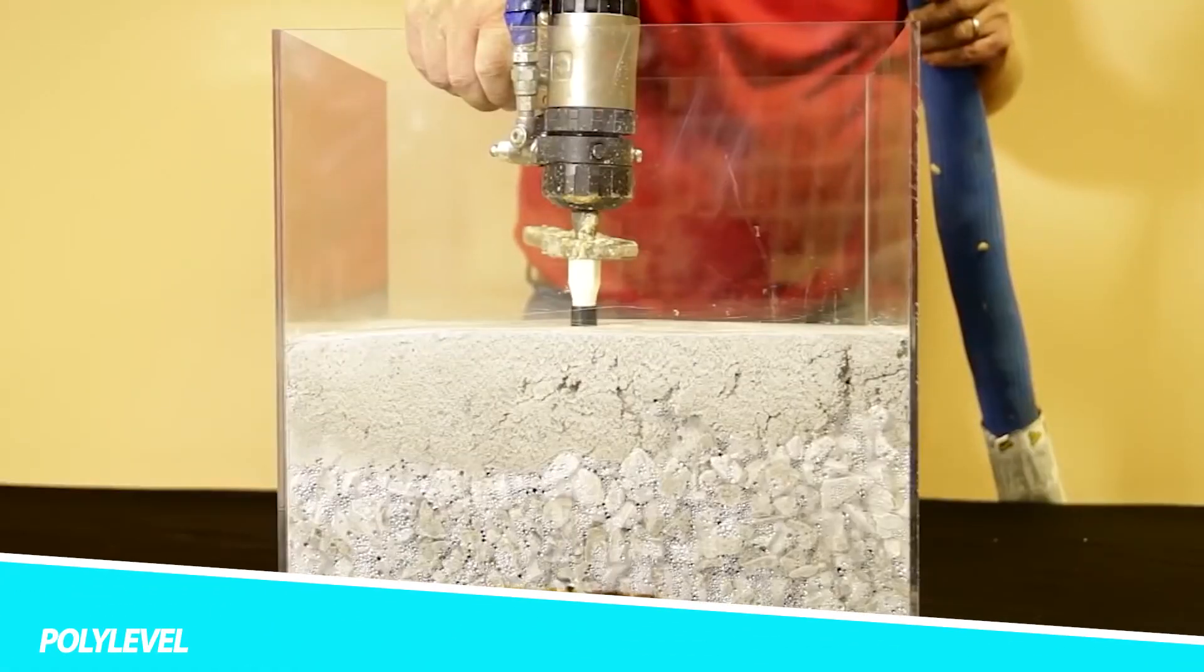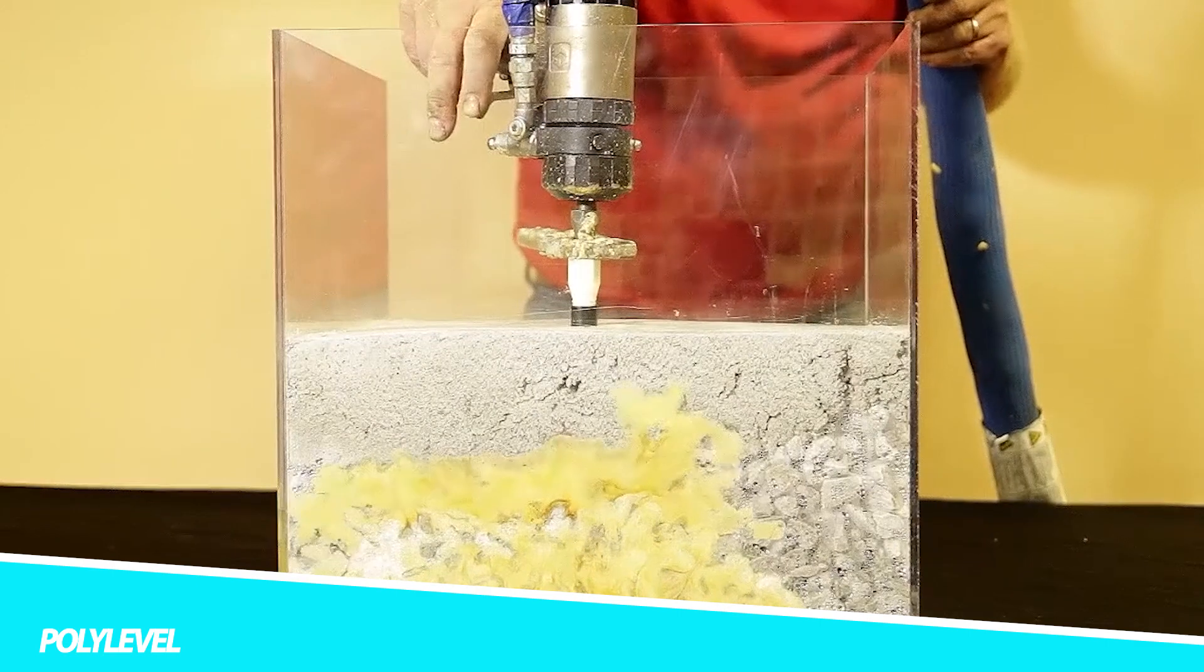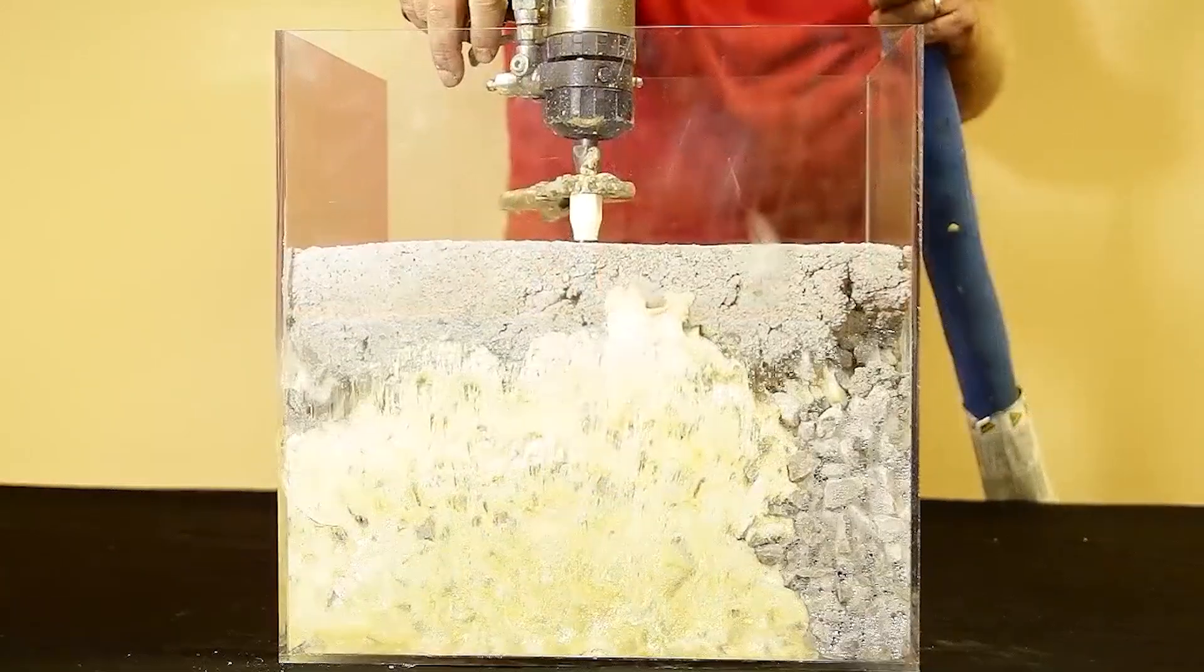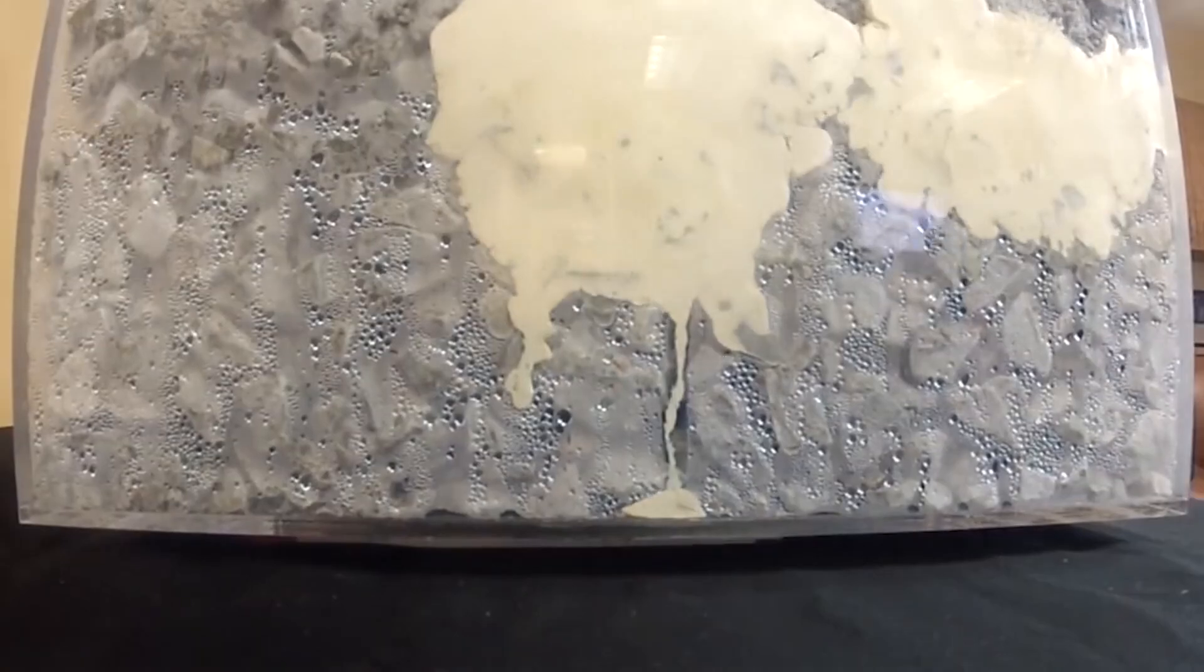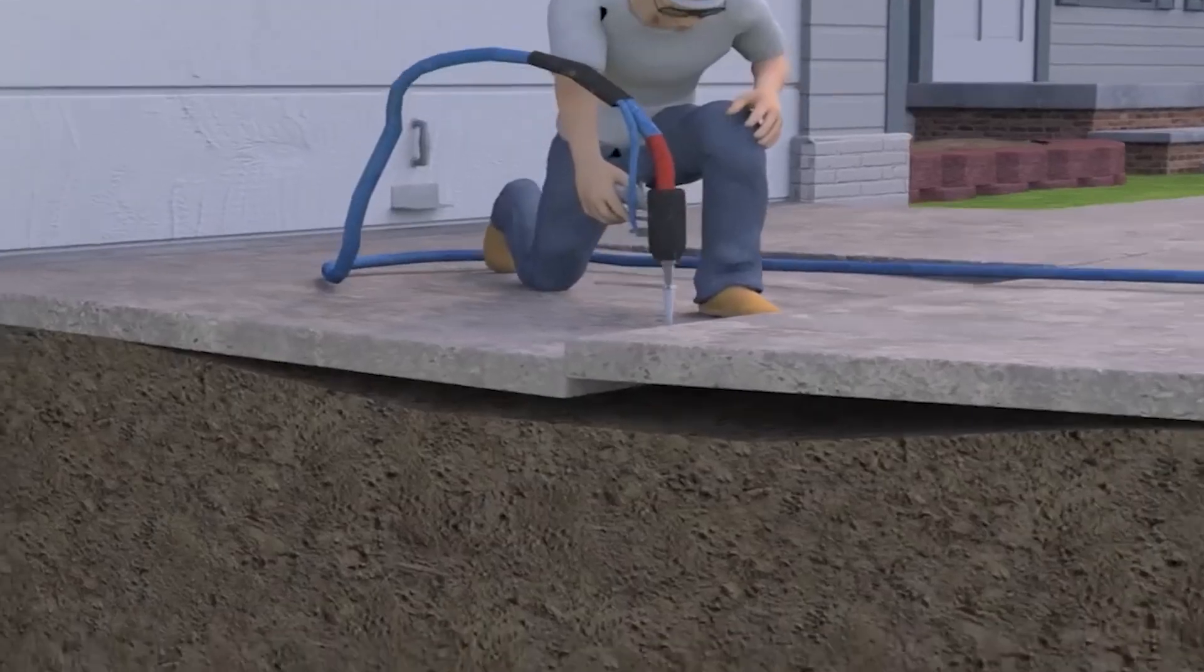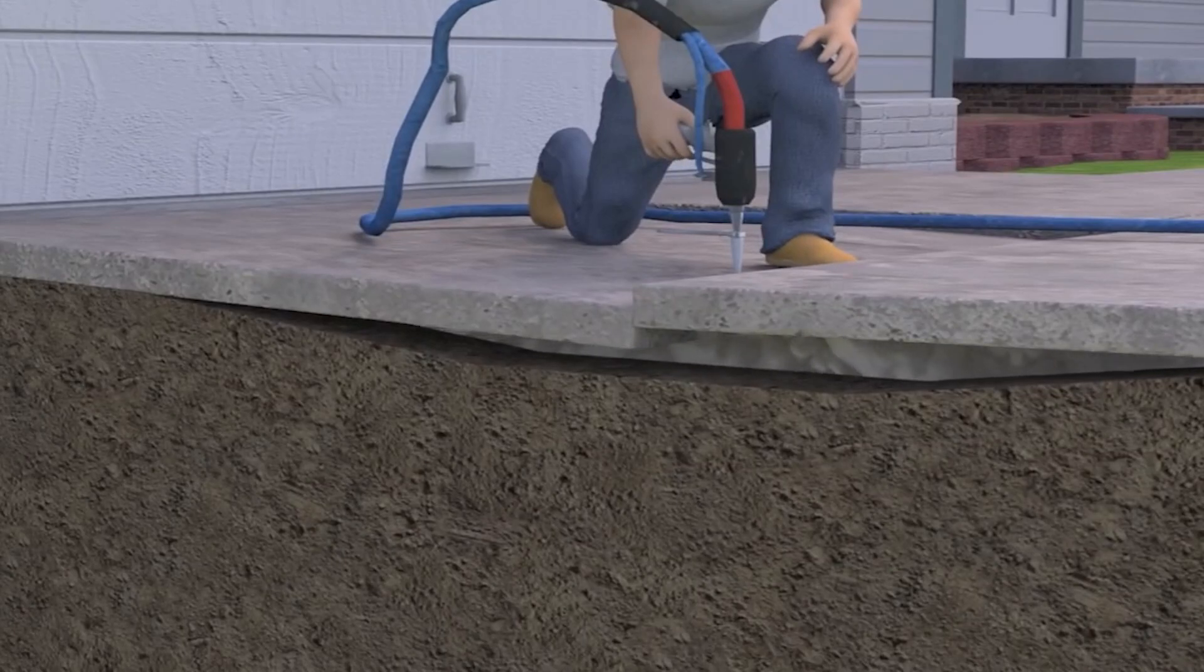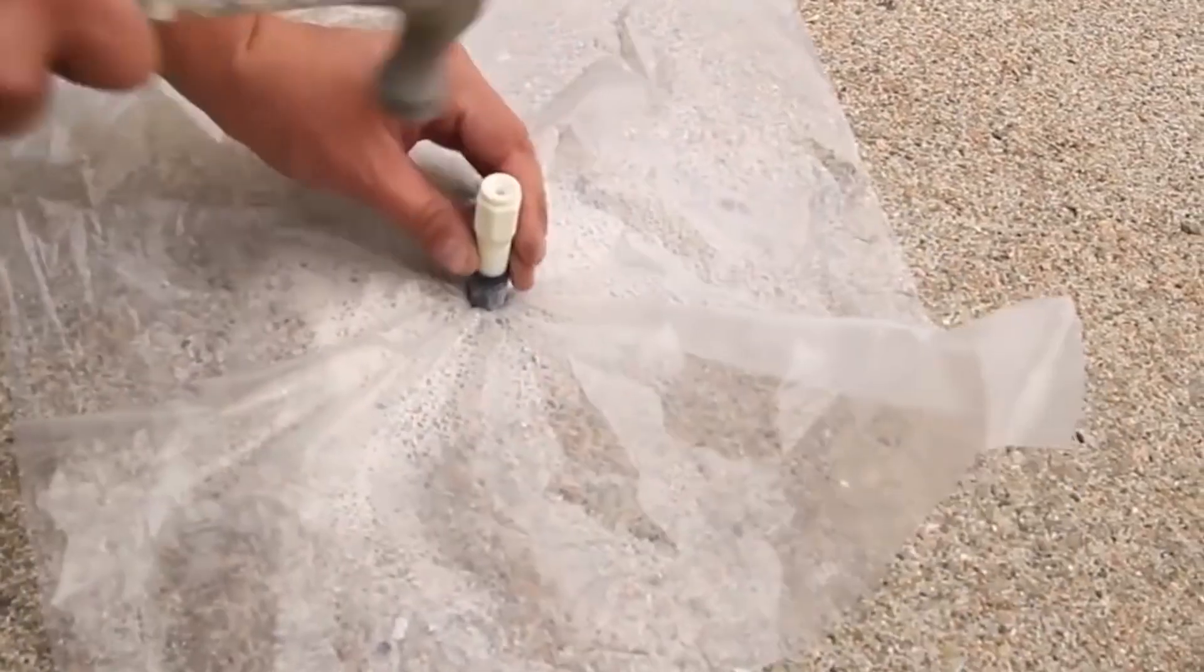Polylevel is a type of construction technique used to lift and level concrete slabs that have settled or sunk due to soil erosion, poor compaction, or other factors. The Polylevel system uses high-density polyurethane foam to raise and support sunken concrete, providing a quick and cost-effective solution to concrete settlement problems.